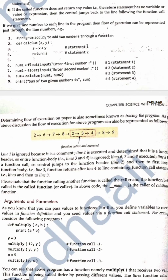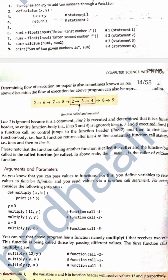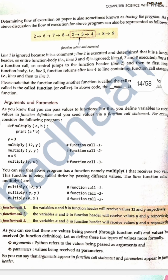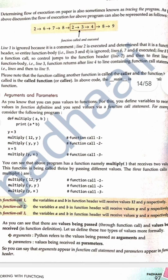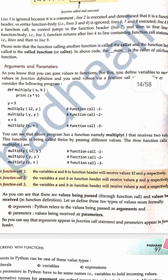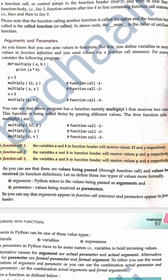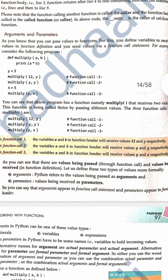It needs to be noted that the function doing the calling is called the caller, and the function being called is called the callee or called function. Arguments are the values being passed in the function call statement, and parameters are the values being received in the function header. You may say arguments appear in function call statements and parameters appear in the function header.